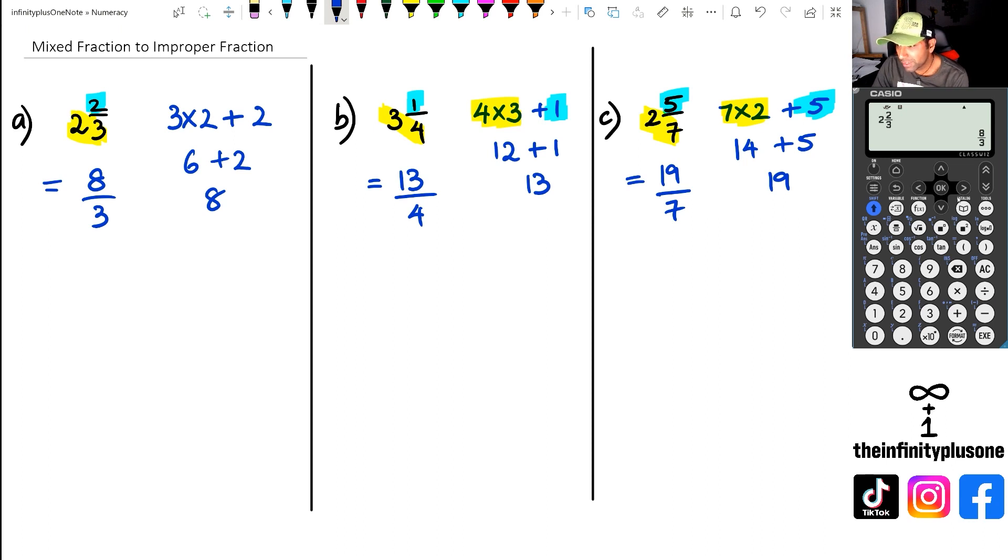Let's do two and five sevenths as well. So two and five sevenths is equal to 19 over seven. As you can see, this is just a quick little way to do it in the calculator as well.